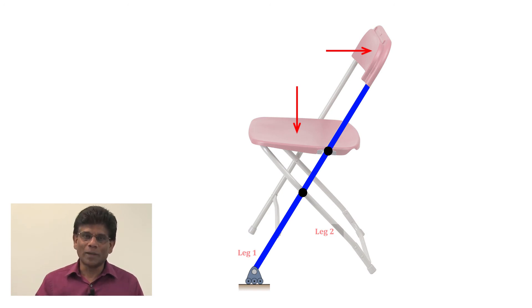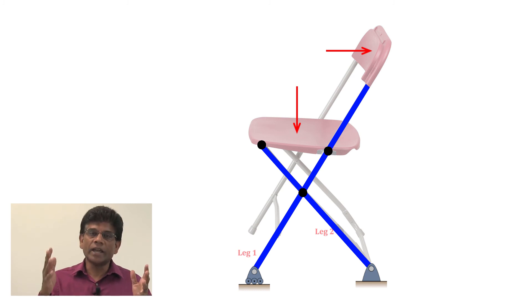You can see the second leg of this chair is also not a two-force member as it has reaction from the floor, reaction at the pin with the first leg, and at the joint with the seat. Clearly, this folding chair is not a truss. It is a frame.